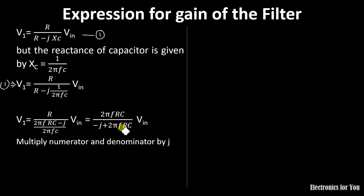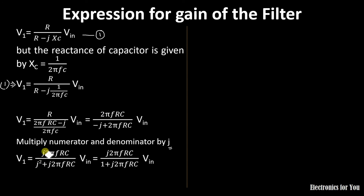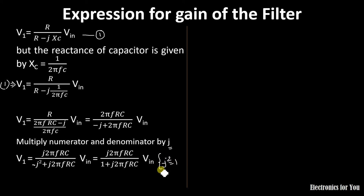Now, multiply the numerator and denominator by j. Multiplying by j introduces j in the numerator and −j × j = −j² in the denominator. Since −j² equals 1, we get V1 = j·2πFRC / (1 + j·2πFRC).